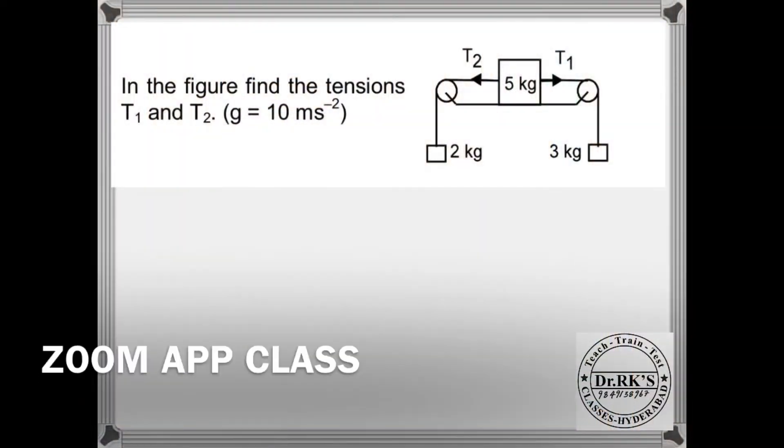So three objects, 2 kg, 3 kg and 5 kg are connected as shown in diagram. You have to find the tension in the strings. If you look at the free body diagram, on 3 kg the gravitational force 3g is acting down, tension T1 is acting up. Similarly on 2 kg, the force acting down is 2g, and the force acting up, that is tension in the string, is T2.